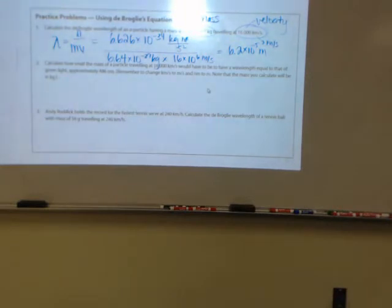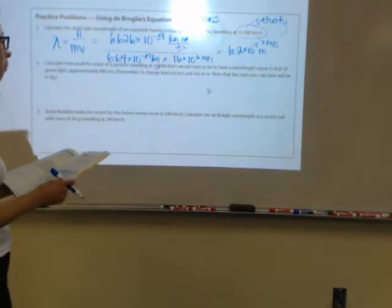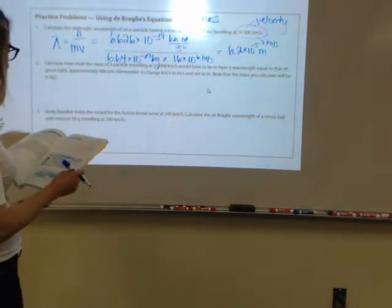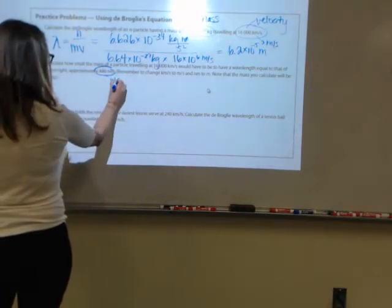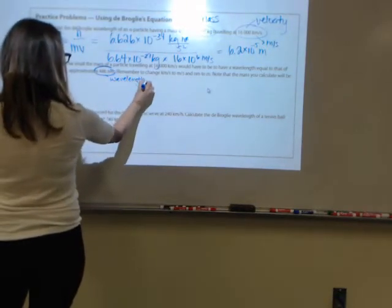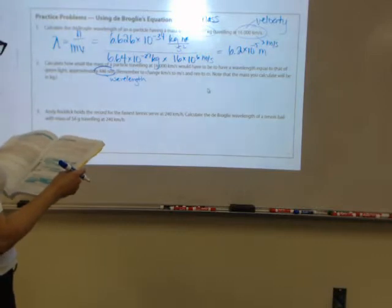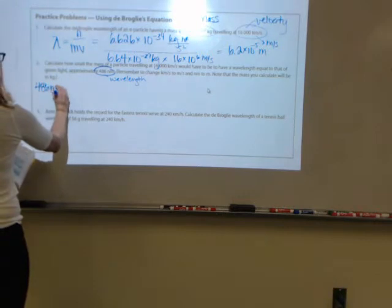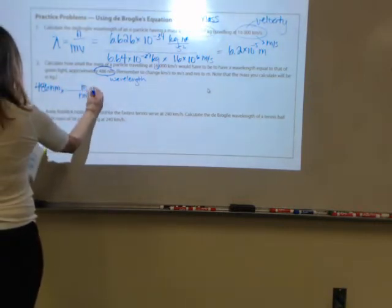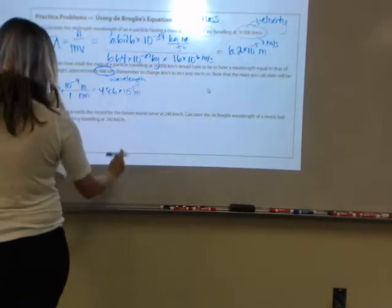Now, number two. Calculate how small the mass of a particle traveling at 16,000 kilometers per second would have to be to have a wavelength equal to that of green light, which is approximately 486 nanometers. Remember to change kilometers per second to meters per second and nanometers to meters. Note that the mass you calculate will be in kilograms. So, let's convert our 486 nanometers to meters in a one-step metric conversion. So, 4.86 times 10 to the negative seventh meters.